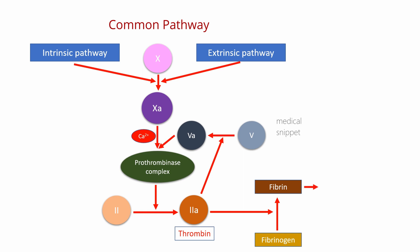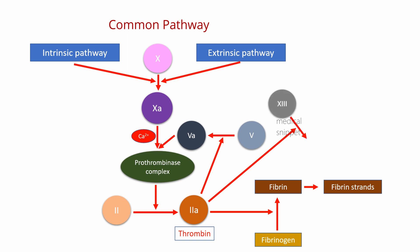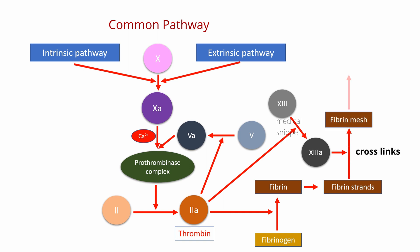The fibrin subunits combine to form fibrin strands. Thrombin also cleaves factor XIII, that is fibrin stabilizing factor, to factor XIIIa. Factor XIIIa crosslinks the fibrin strands to form a fibrin mesh. This mesh stabilizes the platelet plug formed during primary hemostasis. Thrombin also activates factor V, factor VIII, and the platelets. This sequential activation of coagulation factors is called the coagulation cascade.